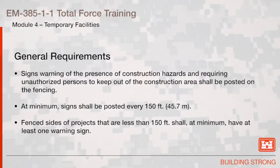Signs warning of the presence of construction hazards and requiring unauthorized persons to keep out of the construction area shall be posted on the fencing. At minimum, signs shall be posted every 150 feet. Fenced sides of projects that are less than 150 feet shall, at minimum, have at least one warning sign.